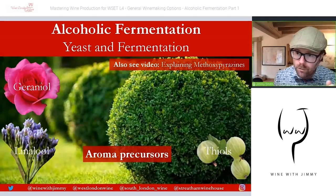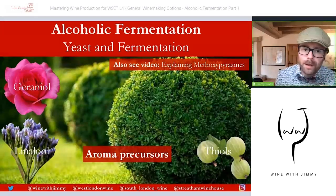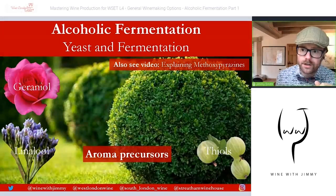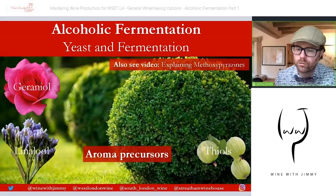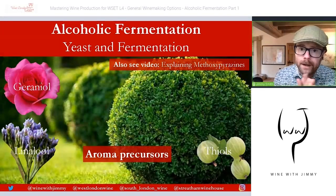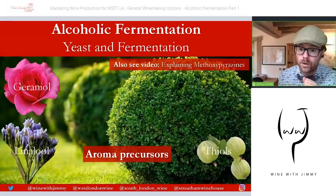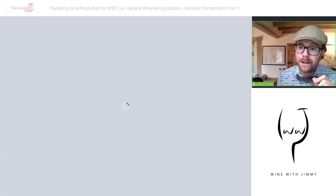Examples of aroma precursors include thiols — like the gooseberry and boxwood characters typically found in Sauvignon Blanc — and black currant found in Cabernet Sauvignon. Many terpenes are also precursors, such as linalool, which gives a lavender characteristic, and geraniol, which gives a rose-like character typically found in Muscat. For more on pyrazines and methoxypyrazines as precursors, there is a separate video available on explaining wine terminology.